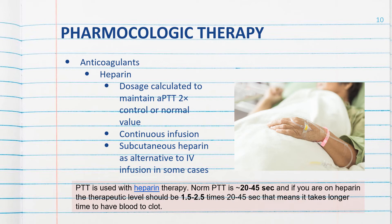When a patient is on Coumadin, we measure the PT and the INR. When the patient is on heparin, we measure the PTT. The PTT normal range is approximately 20 to 45 seconds. If a PTT is prolonged — which will occur with heparin administration — that means it will take longer for their body to form a clot. That is therapeutic; that's what we want. We want the therapeutic level to be between one and a half to two and a half times greater than 20 to 45 seconds — at least twice the normal PTT.